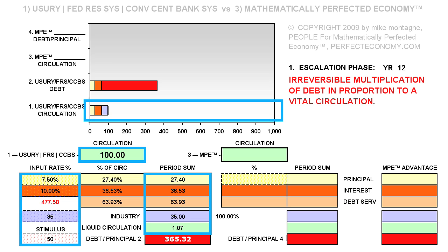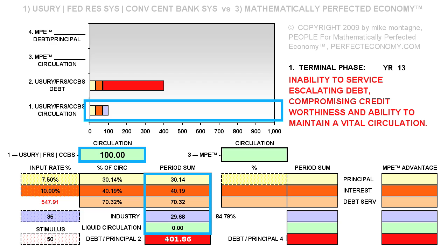Note that while we have restored some liquidity, we remain at the very brink of the terminal phase, with this magnitude of marginalization in fact costing us the most we can possibly afford. As we move on to year 13, we see that our liquidity has vanished to the escalating sum of debt. Further reductions of interest are called for.